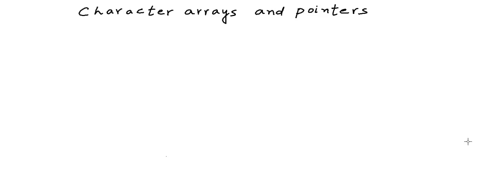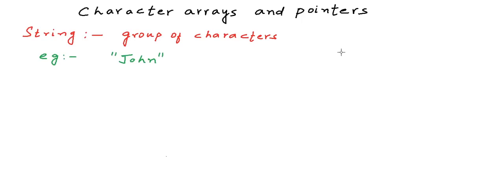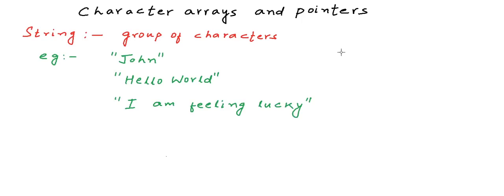In our lesson so far we have seen how the concepts of arrays and pointers go together. Now in this lesson we are going to talk about character arrays and how we can work with character arrays using pointers. When we talk about character arrays in C, we basically want to talk about strings. Strings are a group or set of characters, and real world data like names, phrases, and sentences are all strings.